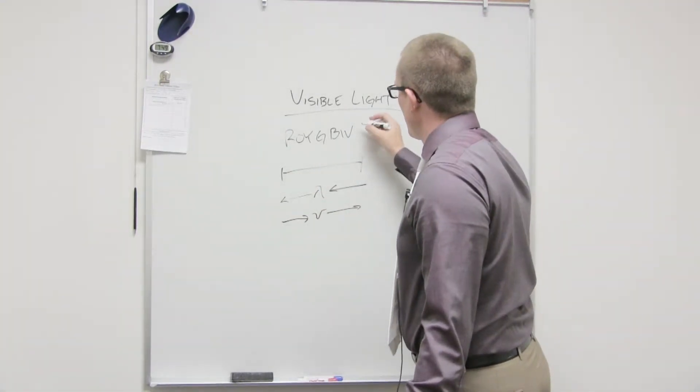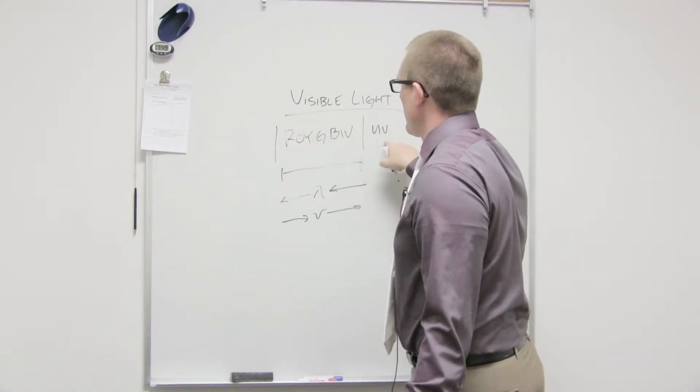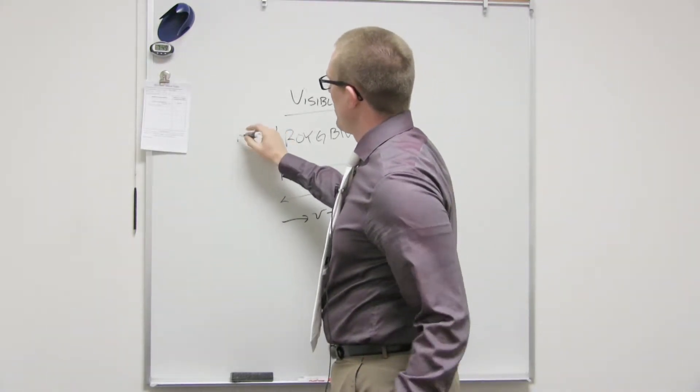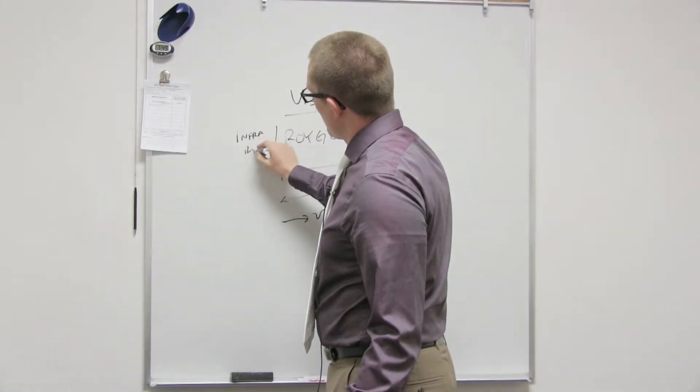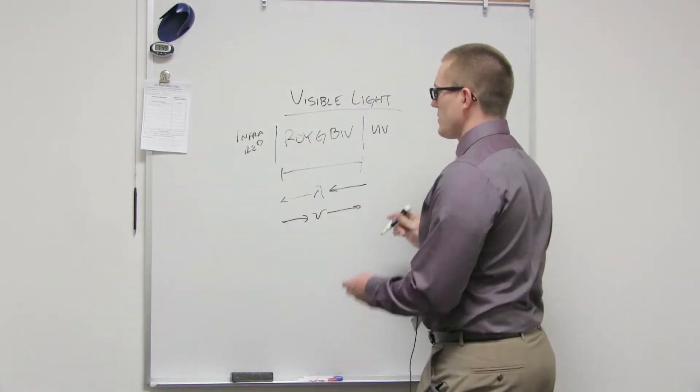And then above this, we have like UV rays. So ultraviolet, so higher than violet. And then red, we have infrared. And so lower than red. And then we can keep going down the spectrum.